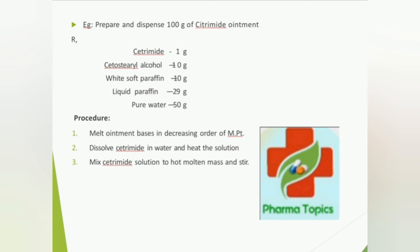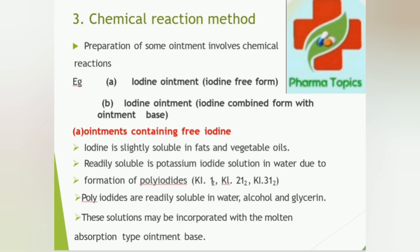For example, to prepare cetrimide ointment by fusion method: melt cetyl alcohol, stearyl alcohol, and white soft paraffin together; add liquid paraffin and mix. Dissolve cetrimide in purified water and warm it to the same temperature as the melted base. Add the warmed aqueous solution of cetrimide into the melted mixture and stir until solidified, then pack in a suitable container, label and dispense.